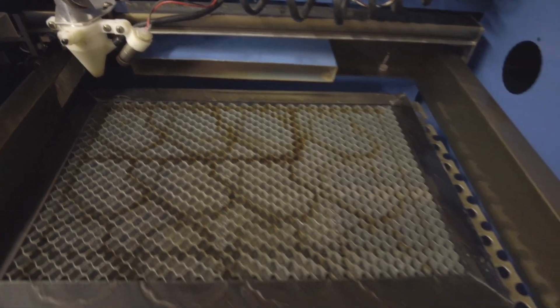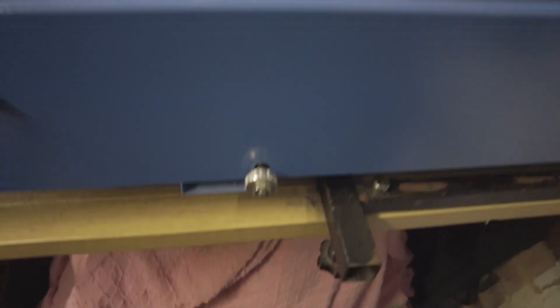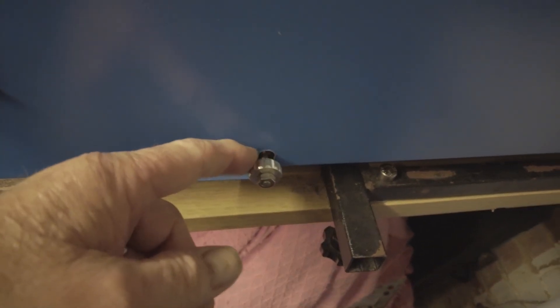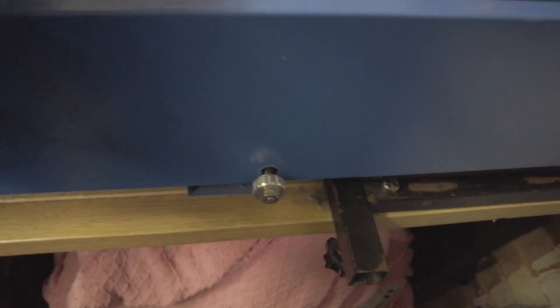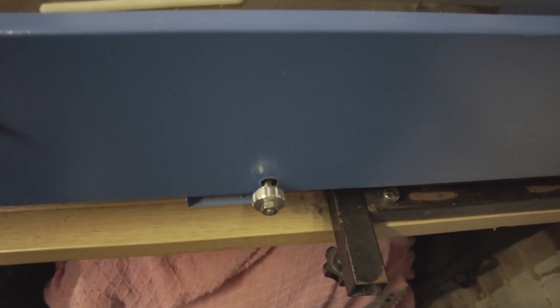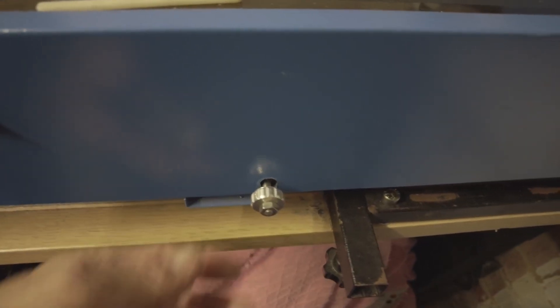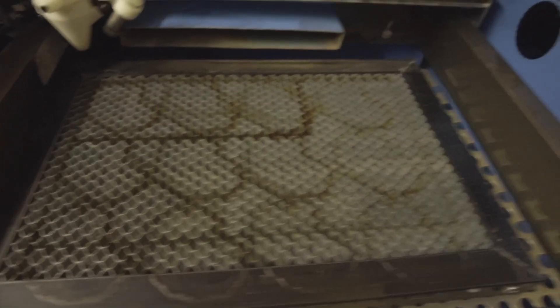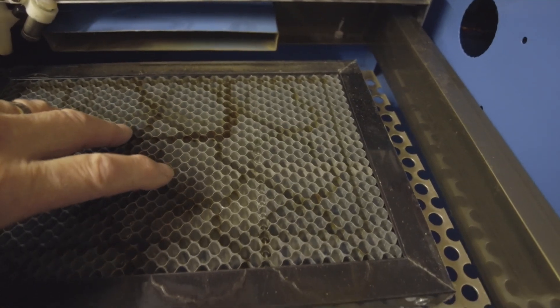See that? Now what that is, is that's the adjustment knob at the front. And it's attached to a scissor table, a small scissor table. Now I'll show you in a moment what that looks like inside. Just take the honeycomb bed out.